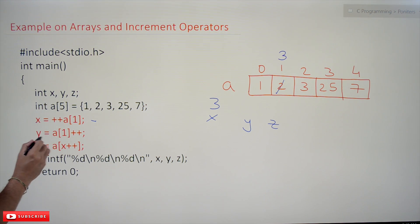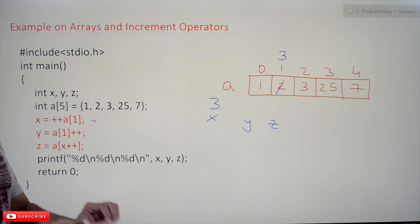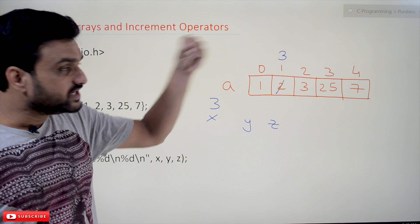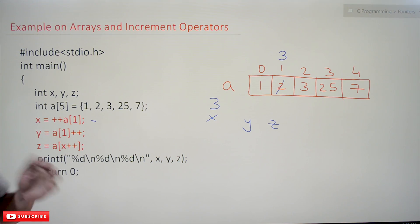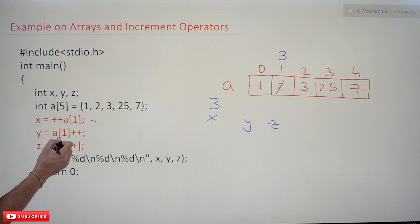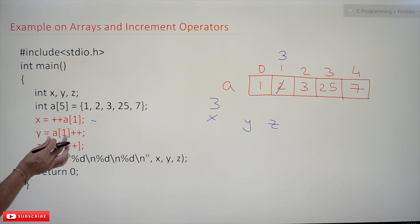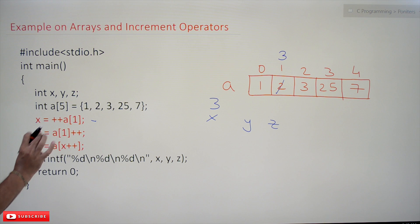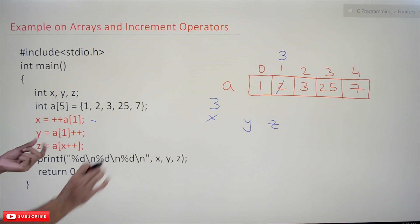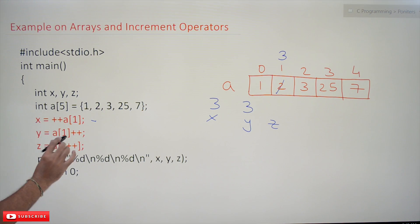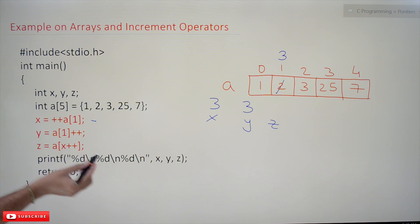The next one is y = a[1]++. Usually, what we think is: the value stored in a[1] is 3, we increment it and assign to y. But that is the main difference between pre-increment and post-increment. With post-increment, the value is taken as-is and assigned to y first. The value stored in a[1] is 3, so 3 gets assigned to y. The value of y is equal to 3.